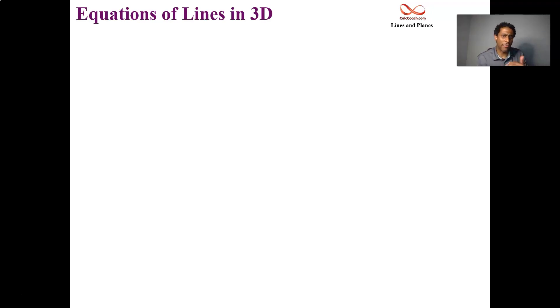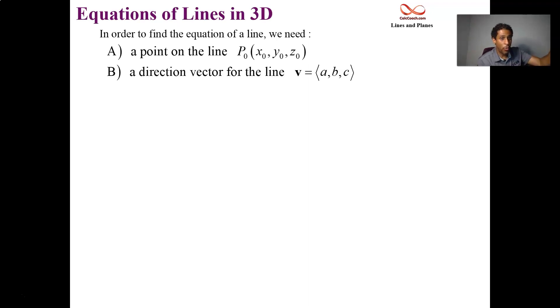All right, so what do you need in order to find an equation of a line in 2D? You needed a point that was on the line and the slope of the line. What do you need to find the equation of a line in 3D? Well, it's going to start off the same way. You're going to need a point that's on the line. But when it comes to a slope, that's not going to be the case. Something that will play the role of the slope is a direction vector for the line.